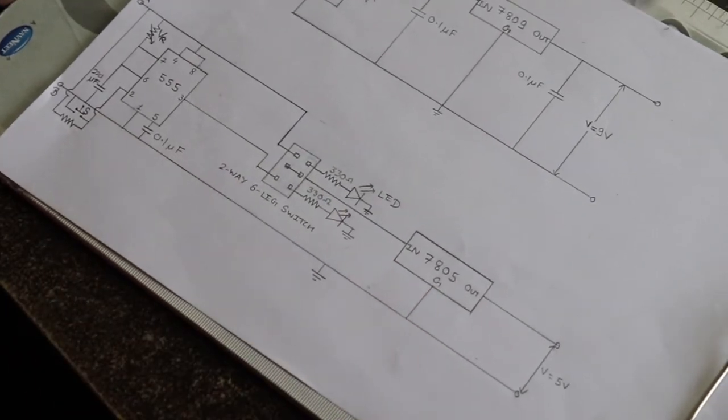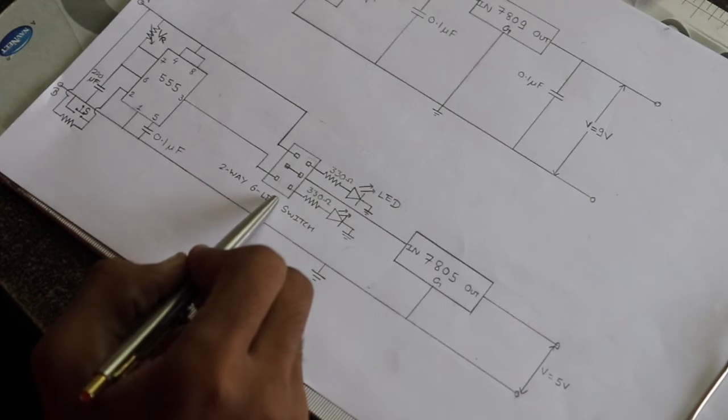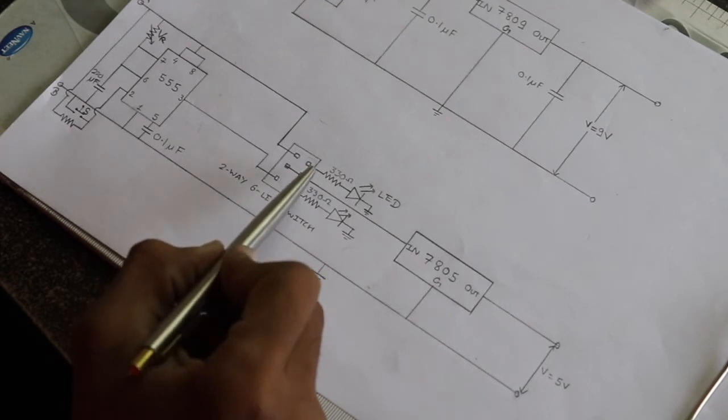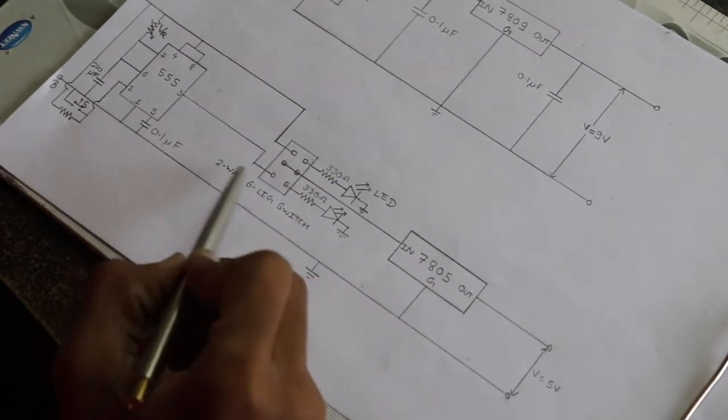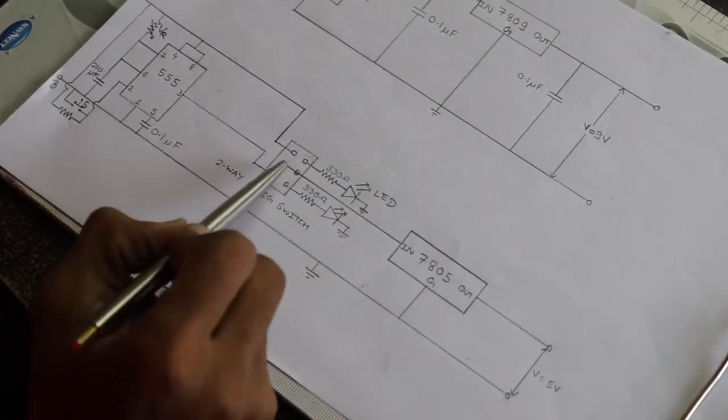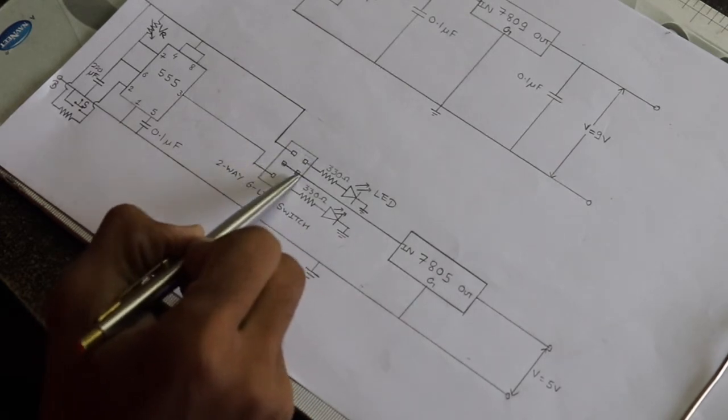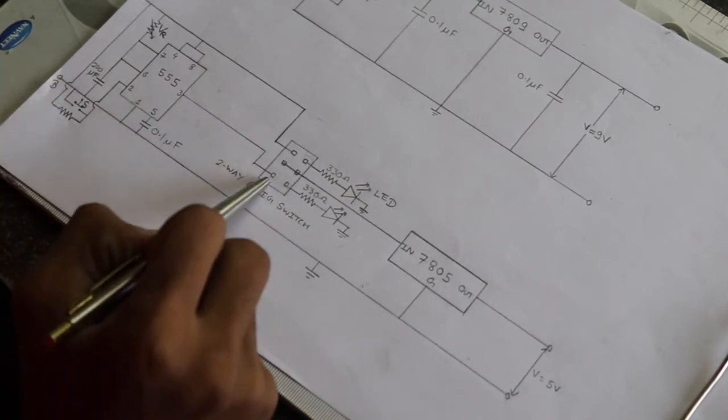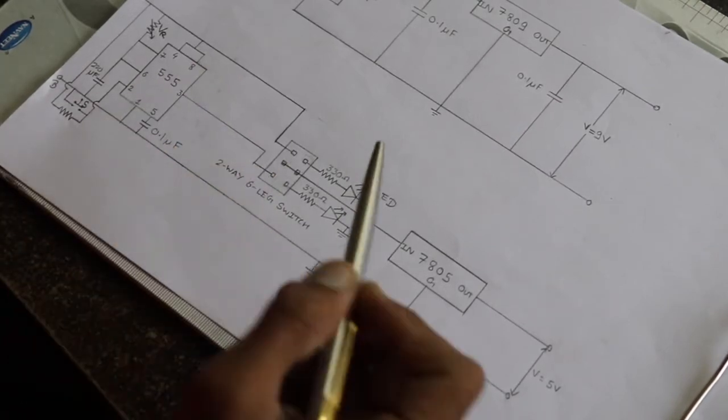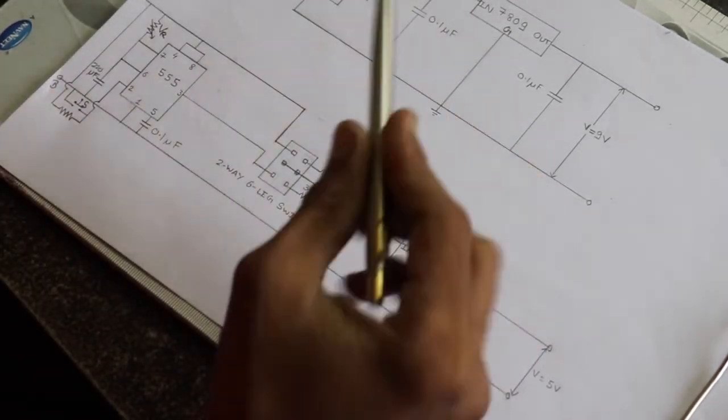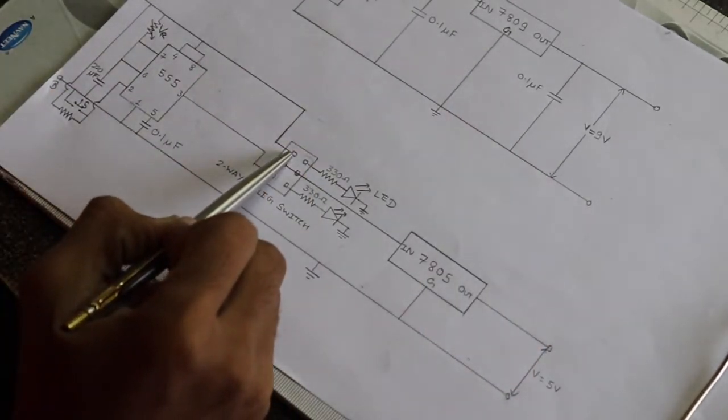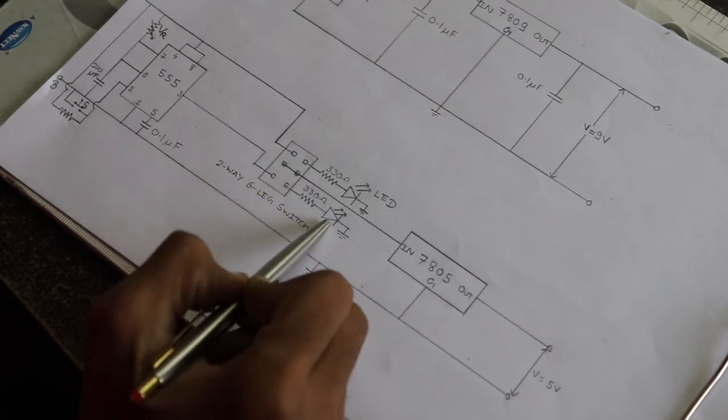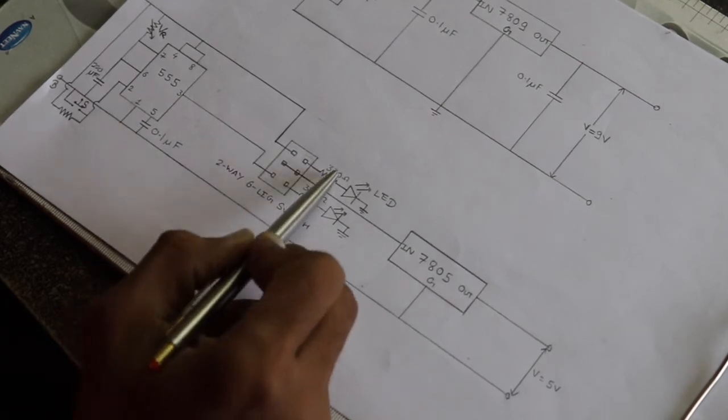From the next circuit comes the 2 way 6 leg switch. This circuit is responsible whether the user wants to take a constant supply or use the timer. The switch contains 6 legs. Middle 2 legs are shorted and taken as the output. The output from the timer is taken as input to the switch, and the output from the 7809 is taken as another input to the switch. Then the remaining 2 terminals are connected to the 2 LEDs of different colors through 330 ohm resistance.